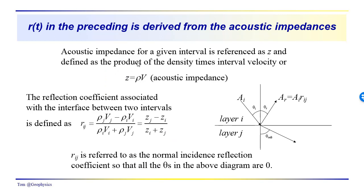Here's some more basic background. The acoustic impedance Z is equal to the product of density times velocity — this could be compressional wave velocity or shear wave velocity, giving compression wave impedance or shear wave impedance. The reflection coefficient between layers I and J — an overlying layer I and underlying layer J — is the acoustic impedance of the lower layer minus that of the overlying layer, over the sum of the two impedances. In abbreviated form: R = (Z_J − Z_I) / (Z_I + Z_J).